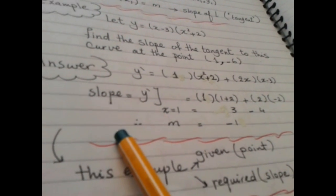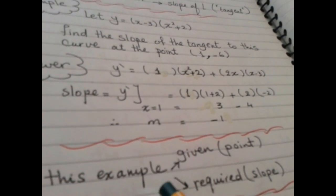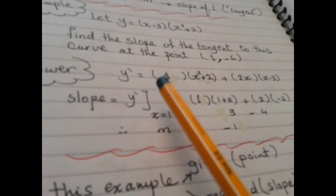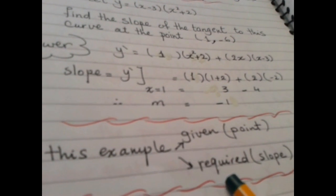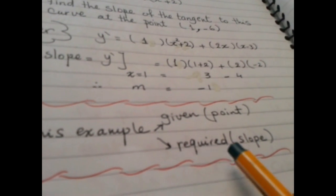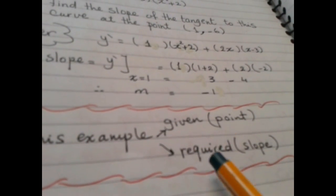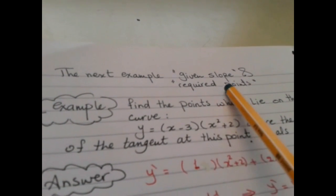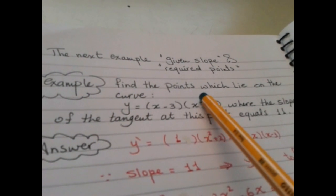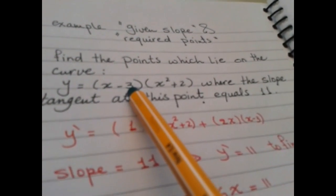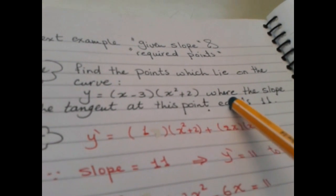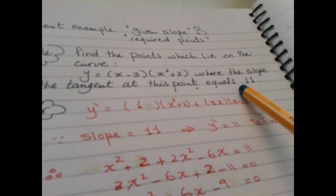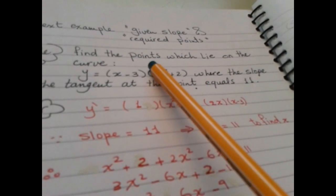Note that in this example, the point was given and we were asked to find the slope. The given was the point and the required was the slope. The next example will ask about the point and give us the slope — the opposite of the first example.